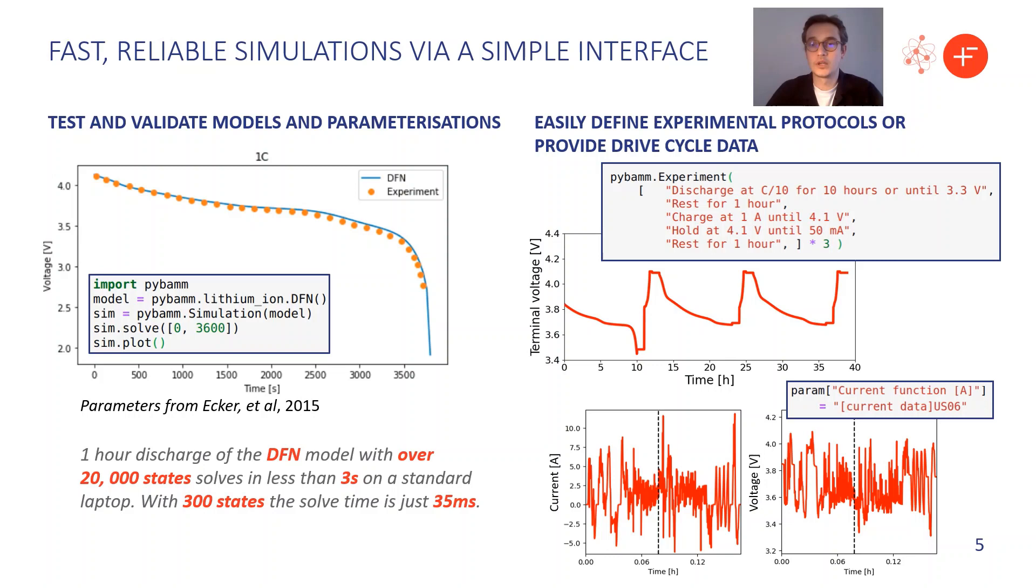On the left here we've got an example of a 1C constant current discharge using a parameter set from Chen's paper from 2015. This particular example took around three seconds to solve on a standard laptop computer when it was discretized to give over 20,000 states. If you reduce the number of states to just 300, then the solve time is just 35 milliseconds.